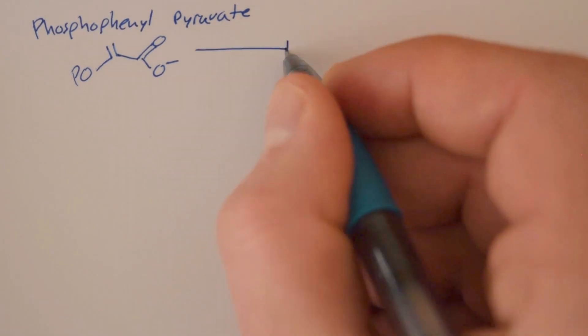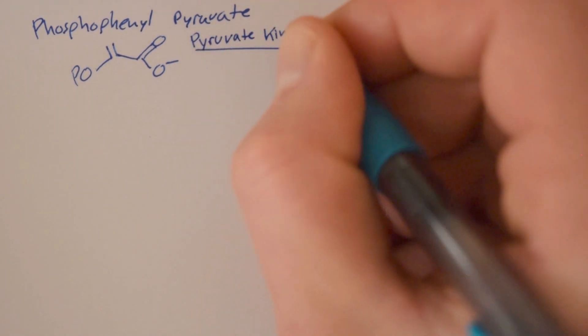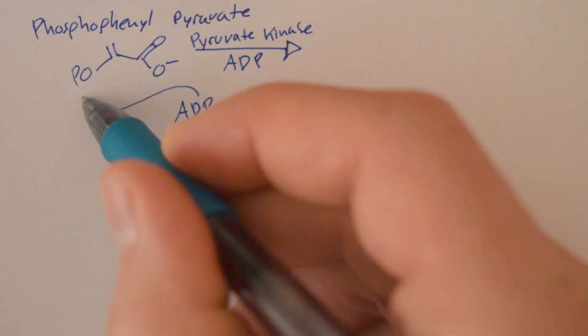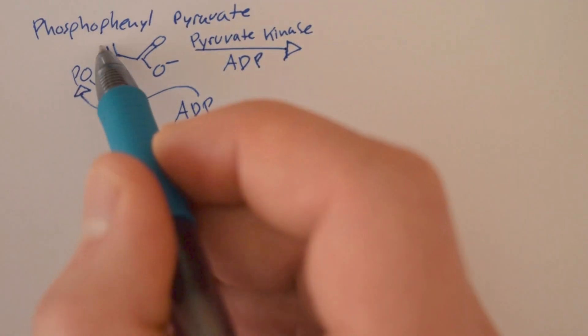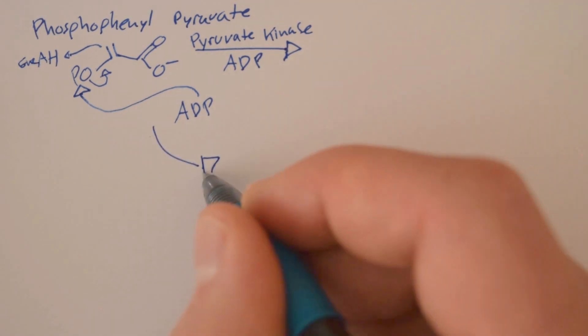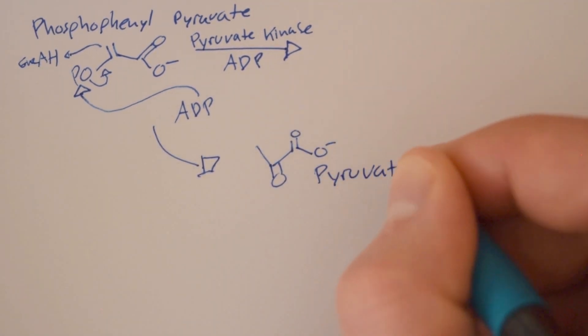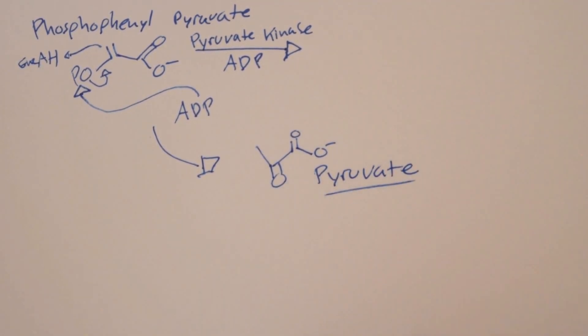Finally, the last enzyme is pyruvate kinase and an ADP molecule. These take off the last phosphate group and leave us with our final product, pyruvate, which can then go on to the citric acid cycle.